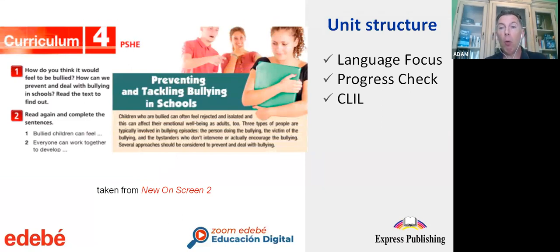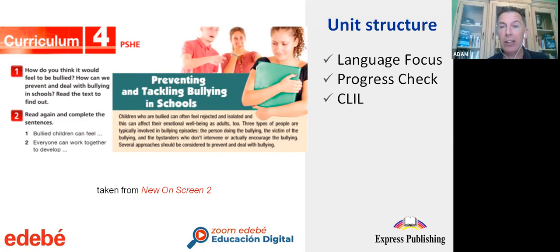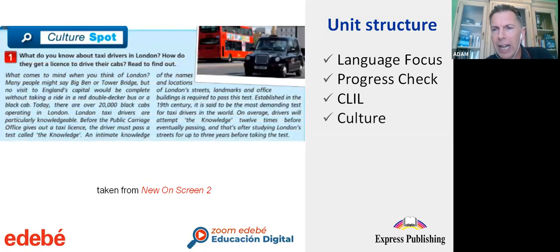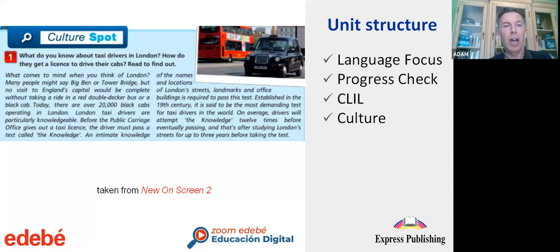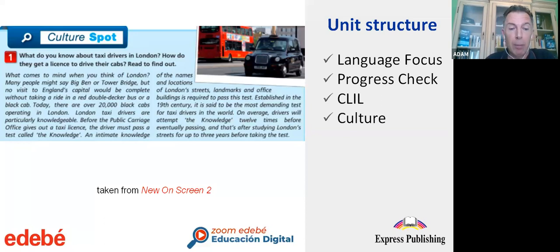CLIL is also present, as we would expect, and it covers a whole range across the curriculum — here's an example from personal, social, health and economic education, looking at tackling bullying in schools. Related to this we also have culture, which is a fundamental feature of language learning, helping students put language into context. Here we have a nice article about London black cabs and how taxi drivers require a specific license.